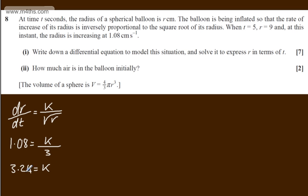So I can write that in now. Therefore, dr/dt will be equal to 3.24 over the root of r. I'm going to separate the variables and integrate. This is a first-order linear differential equation. So I'm going to write this as r to the half. We've got r to the half dr will be equal to 3.24 dt.